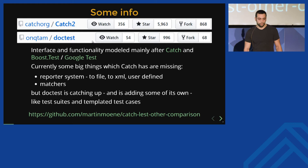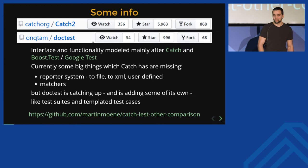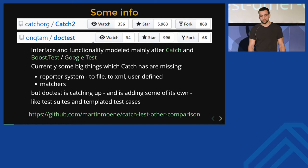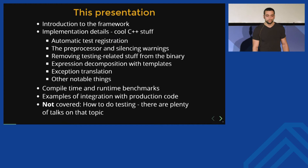There are two big things which Catch has and Doctest doesn't: a reporter system for output beyond the console — so XML, user-defined, et cetera — and matchers. But Doctest has some features of its own like test suites and template test cases. There is also a great repository by Martin which compares three very similar testing frameworks: Catch, Last, and Doctest.